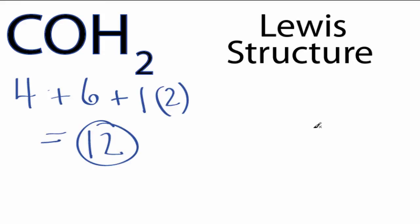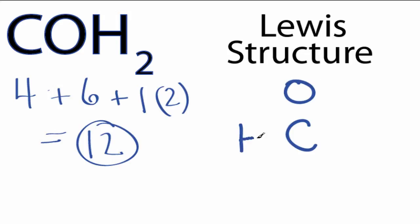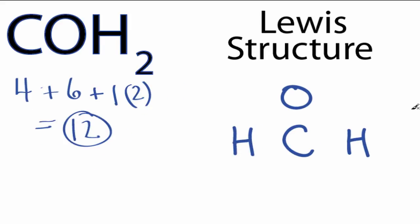Hydrogens always go on the outside, and then we'll put carbon in the middle — carbon's the least electronegative, so that's a good place for it. We'll put the oxygen here, and then we have 2 hydrogens like this. We'll put 2 electrons between atoms to form chemical bonds, so we've used 6.